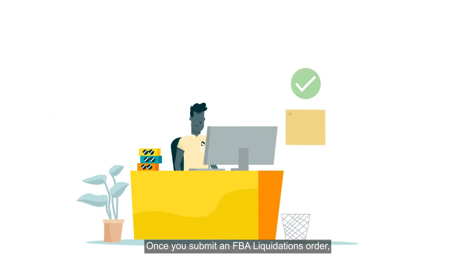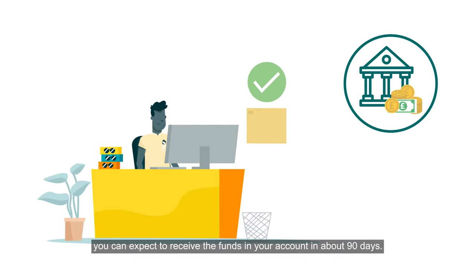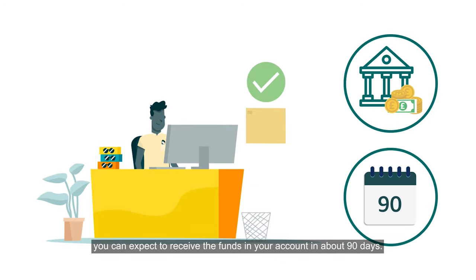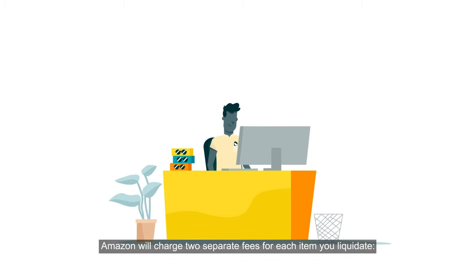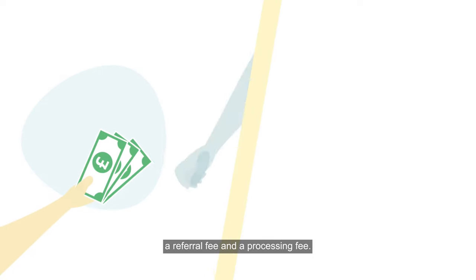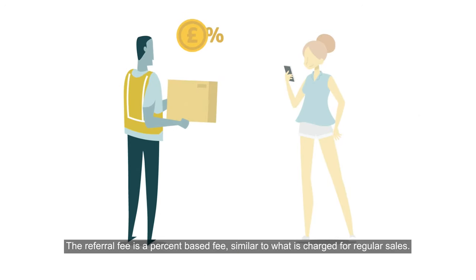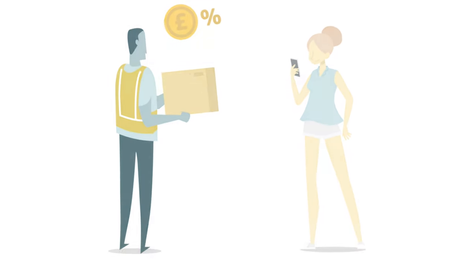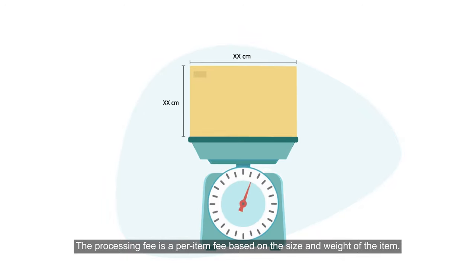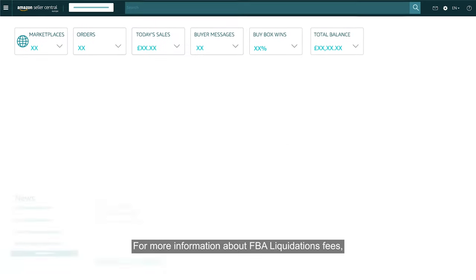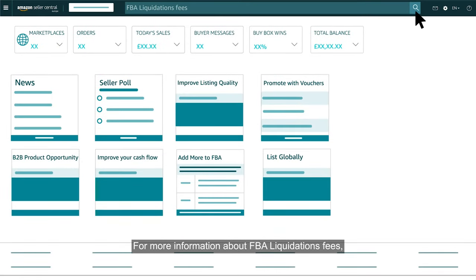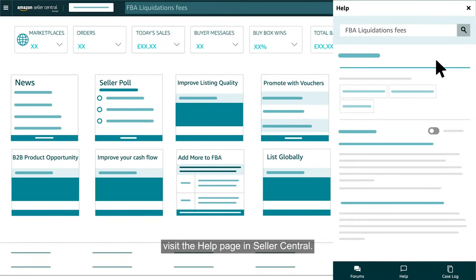Once you submit an FBA liquidations order, you can expect to receive the funds in your account in about 90 days. Amazon will charge two separate fees for each item you liquidate: a referral fee and a processing fee. The referral fee is a percent-based fee, similar to what is charged for regular sales. The processing fee is a per-item fee based on the size and weight of the item. For more information about FBA liquidations fees, visit the help page in Seller Central.